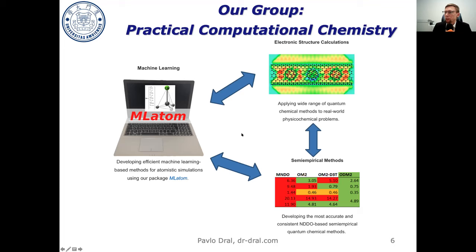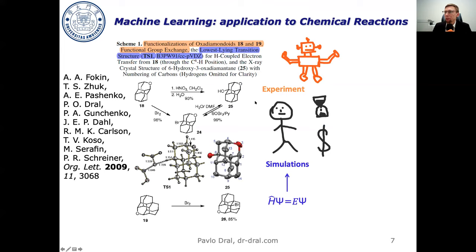Our group focuses on various things — not just machine learning, but also electronic structure calculations and development of quantum chemical and empirical methods. Since this talk is about application to chemical reactions, I will focus more on the quantum chemistry used to simulate reactions. I will start from my background as a computational organic chemist simulating different reactions.